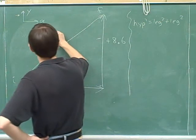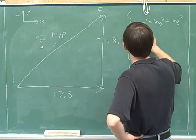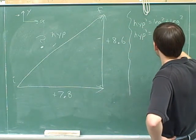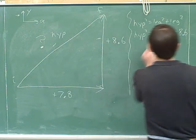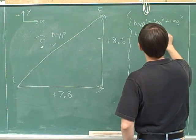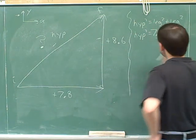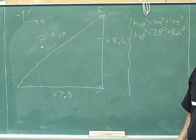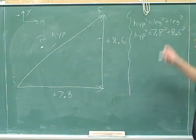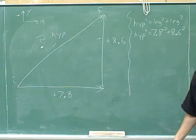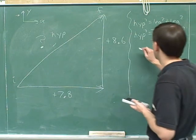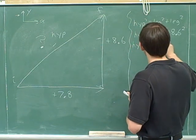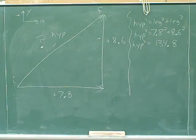We just need the Pythagorean theorem, which says that the hypotenuse squared equals one leg squared plus another leg squared. The hypotenuse is what we don't know; one leg is 7.8 and the other leg is 8.6. Now we're back in the world of geometry where all we care about is lengths and magnitudes, so I'm not going to be indicating signs. We can do one step on our calculator: 7.8 squared plus 8.6 squared comes out to be 134.8.